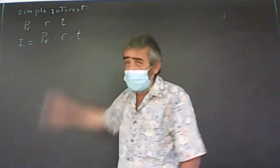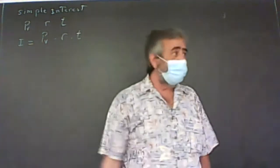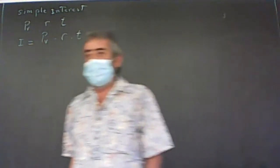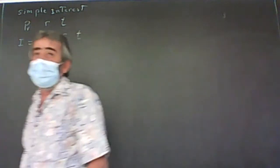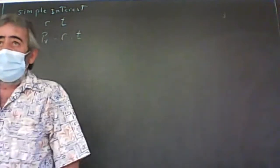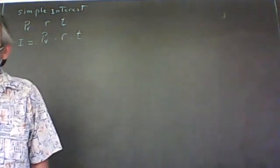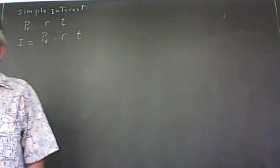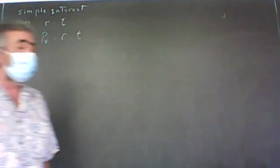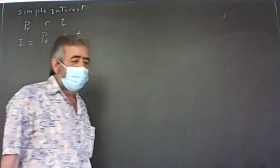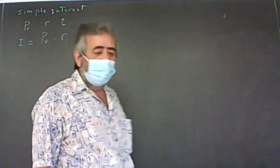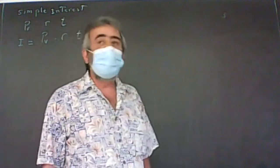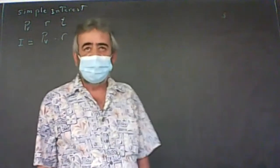T is always in years. If you're given the time in months, figure out how many years by dividing by 12. If given in days, divide by 365. If given in weeks, divide by 52. You always have to change it to number of years.